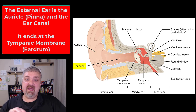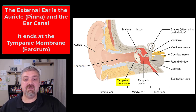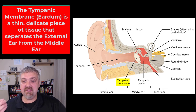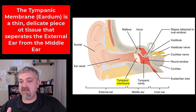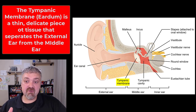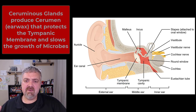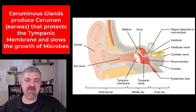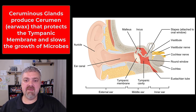Then we have the actual ear canal, which leads to your tympanic membrane. The tympanic membrane is your eardrum — it's this thin, delicate, semi-transparent flap of tissue that separates the external ear from the middle ear. The last thing here with the external ear would be the ceruminous glands. They produce cerumen, or earwax, which slows the growth of microbes in the ear and also offers some protection of your tympanic membrane.